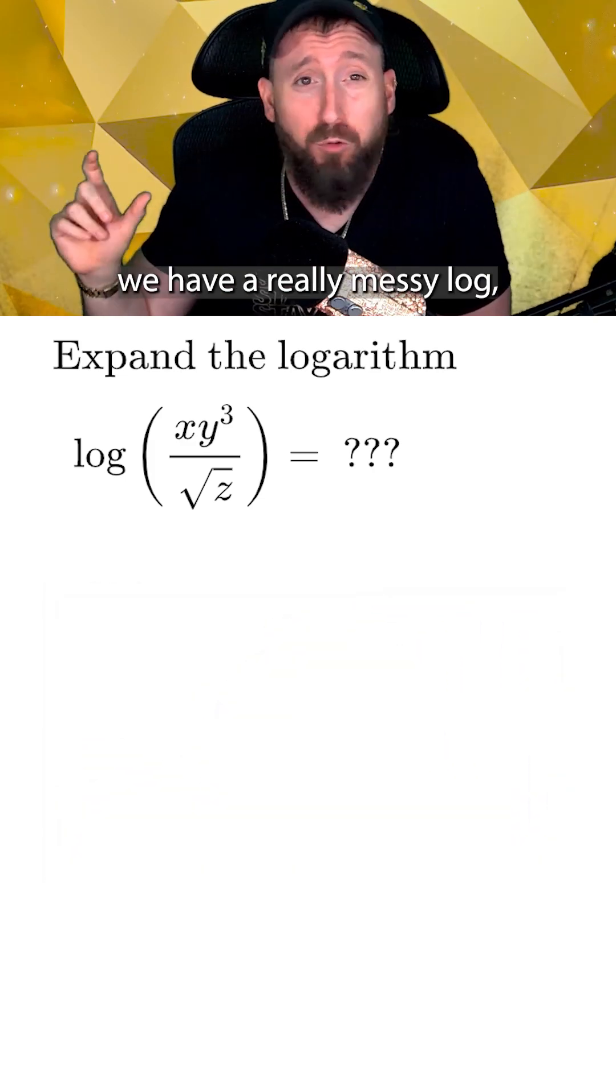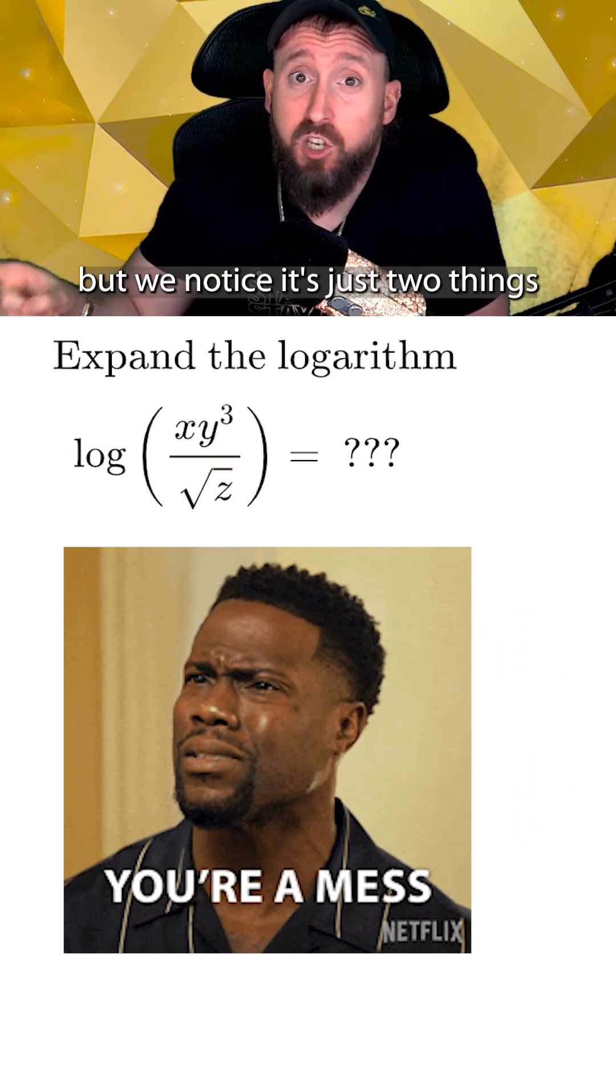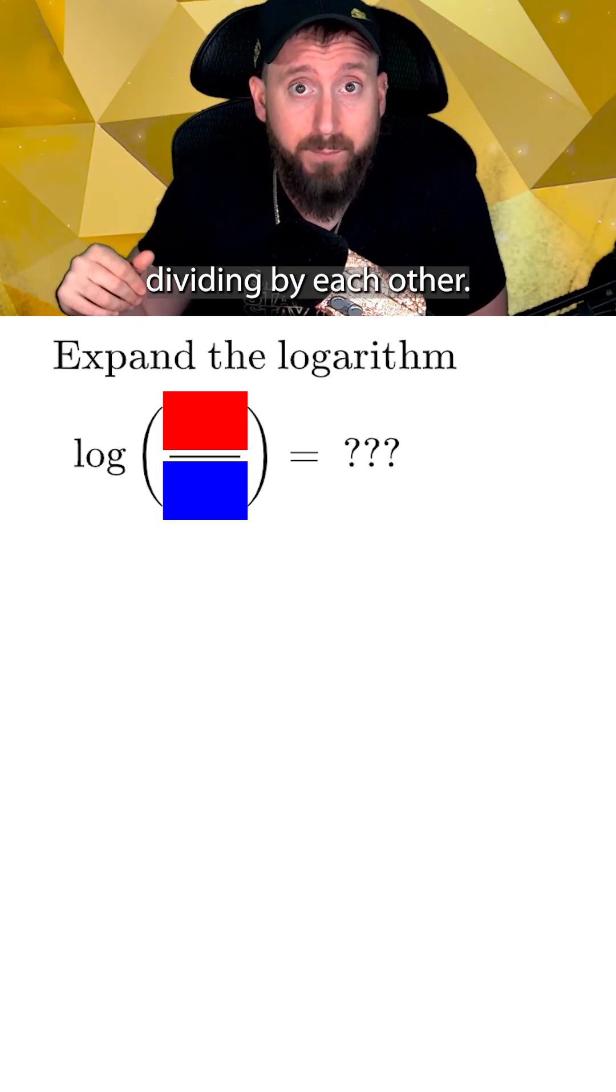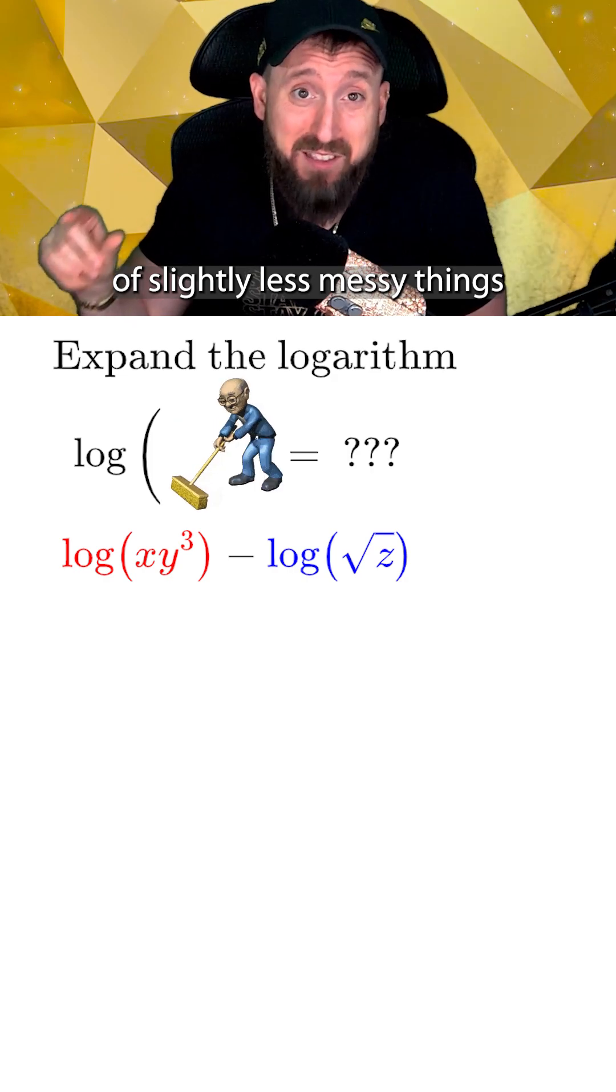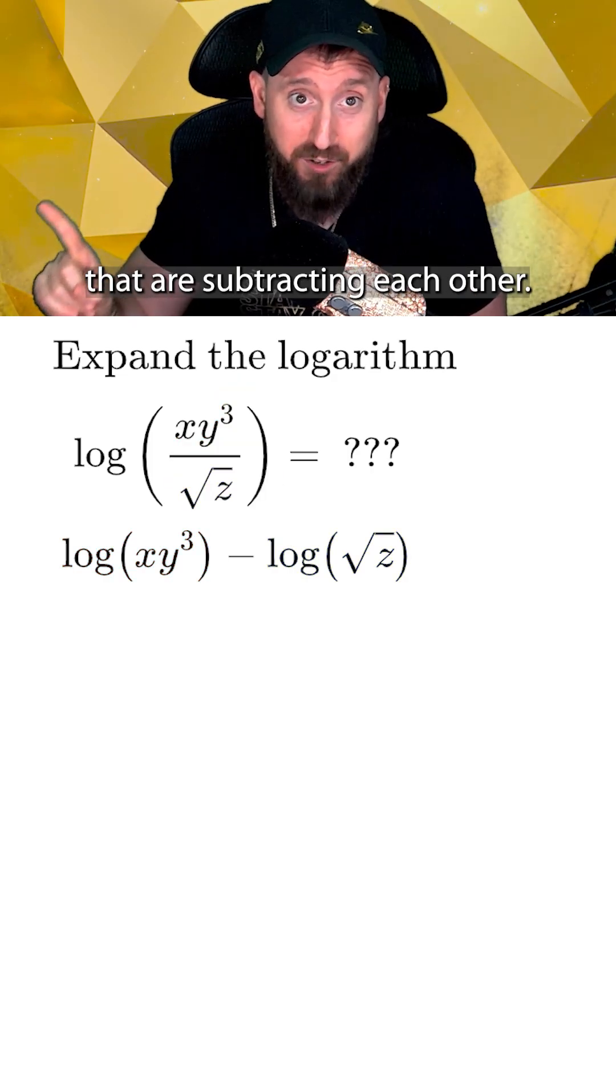For example, here we have a really messy log, but we notice it's just two things dividing by each other. Remembering the quotient rule, we can split this into two separate logs of slightly less messy things that are subtracting each other.